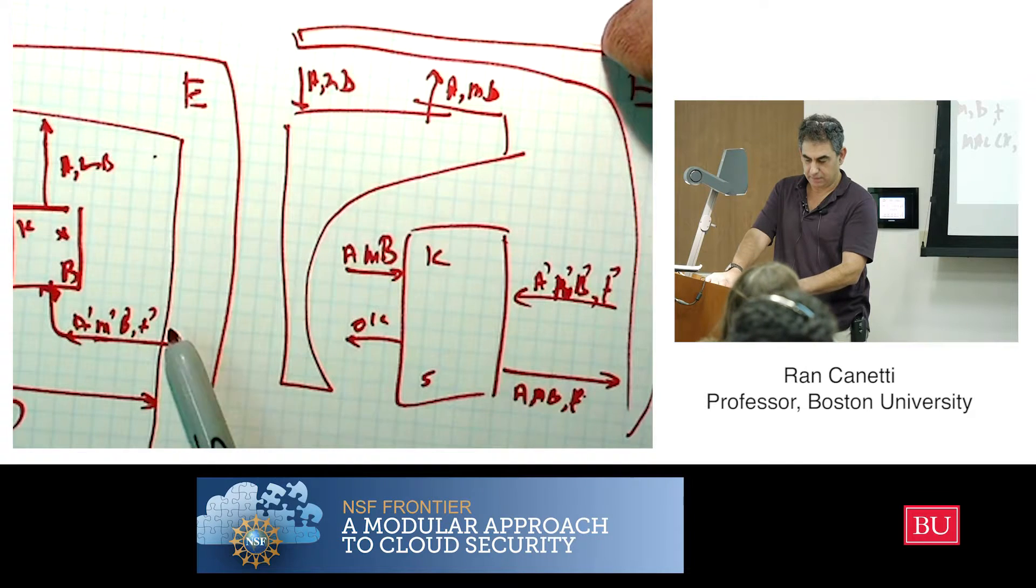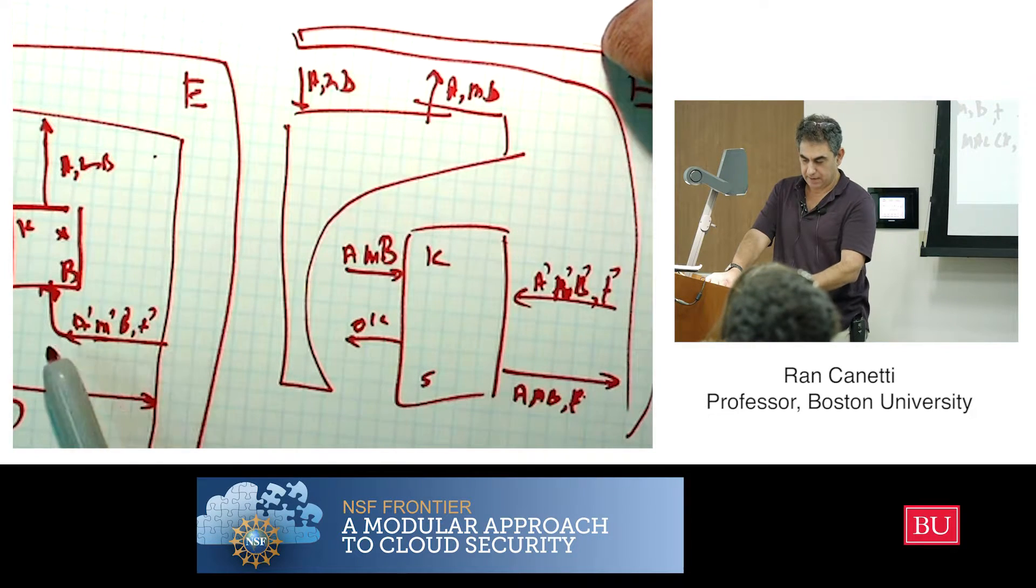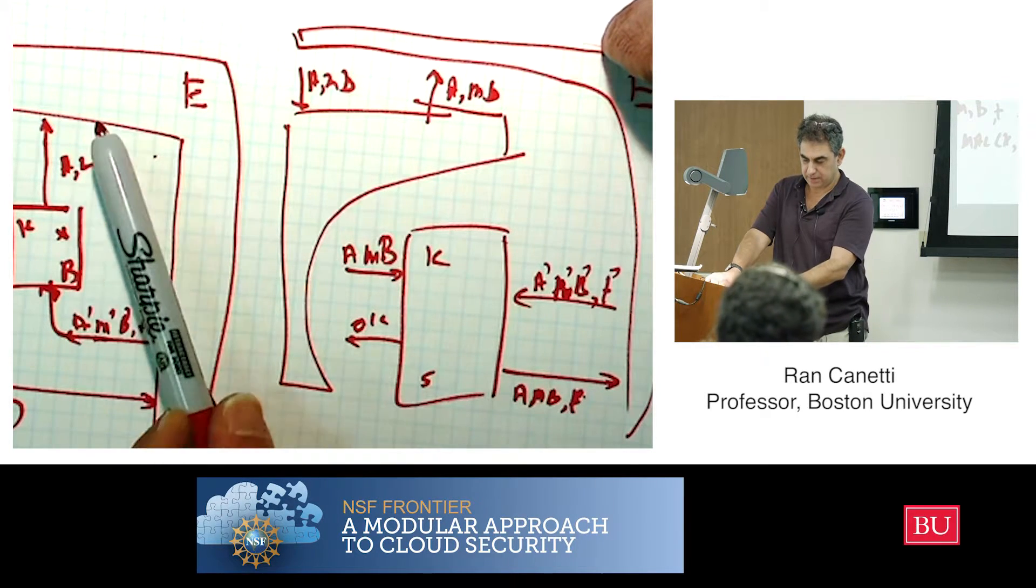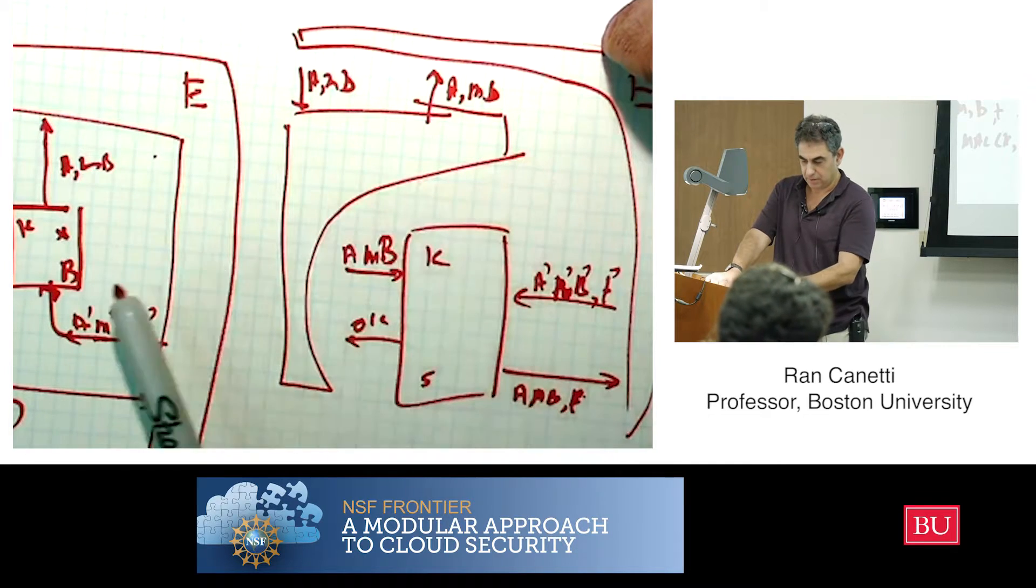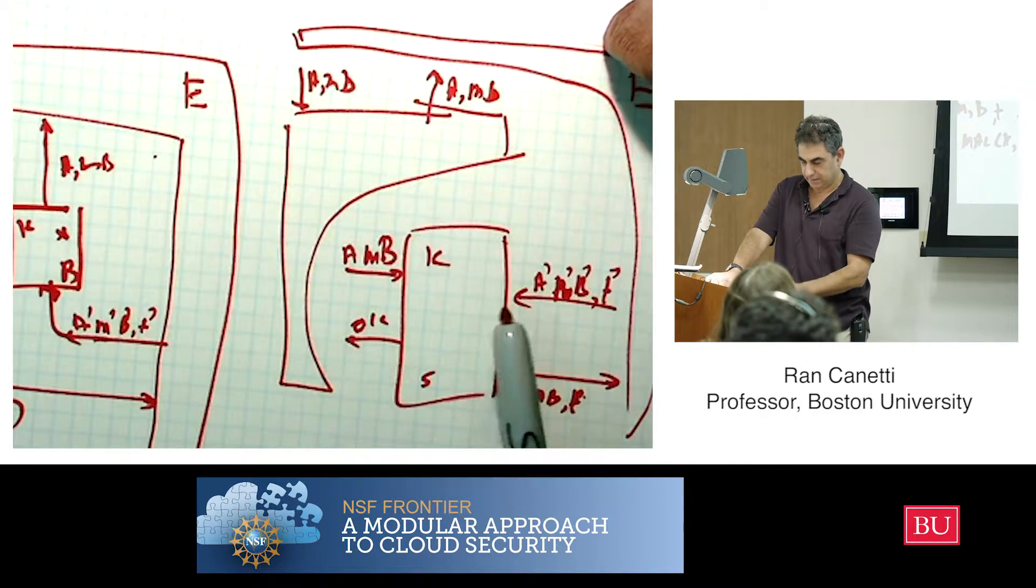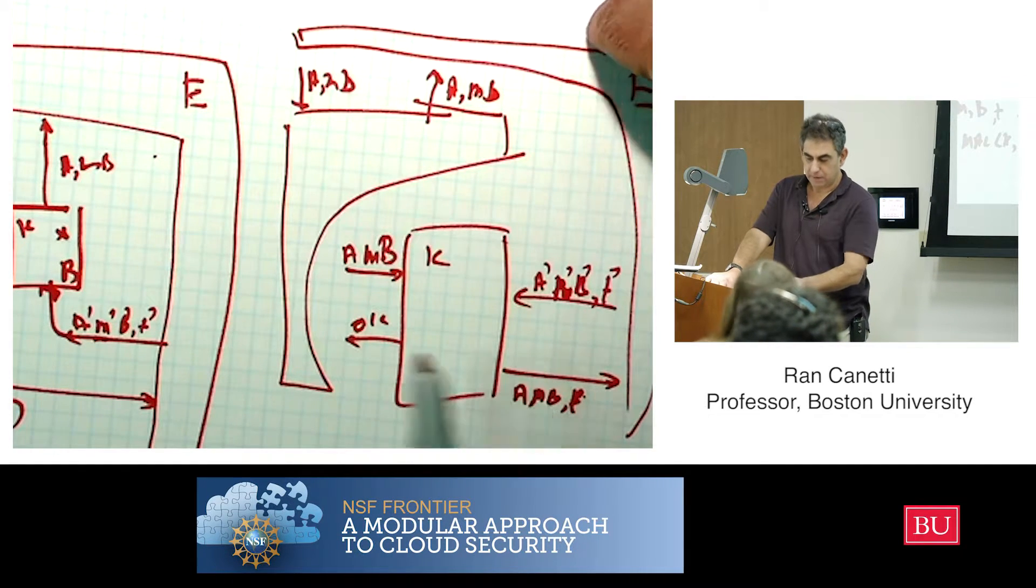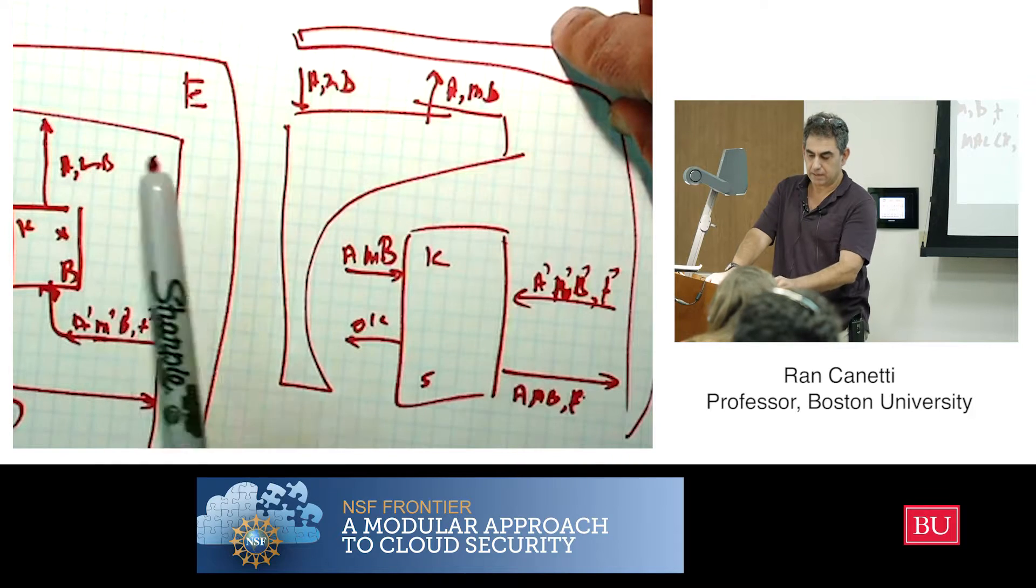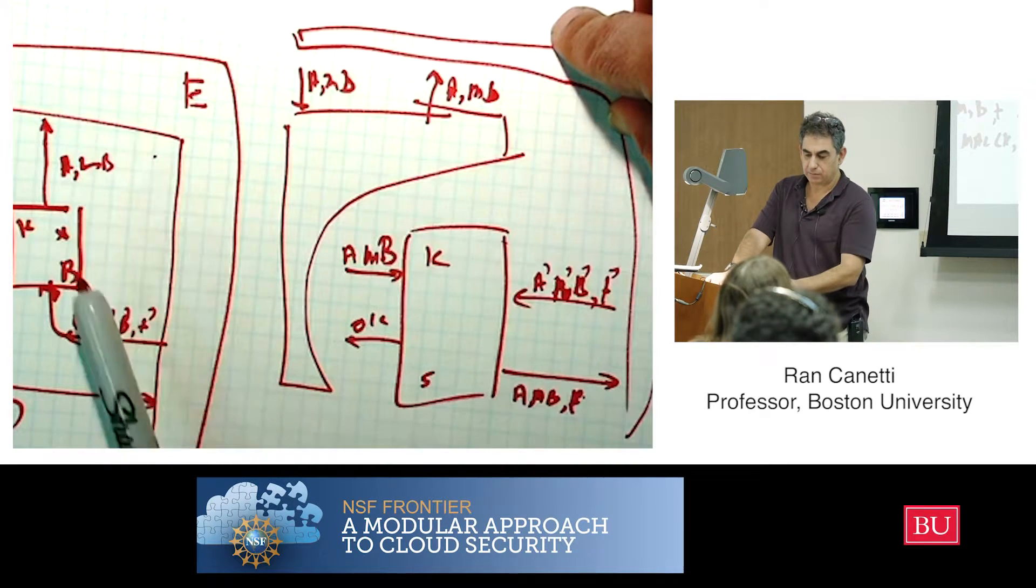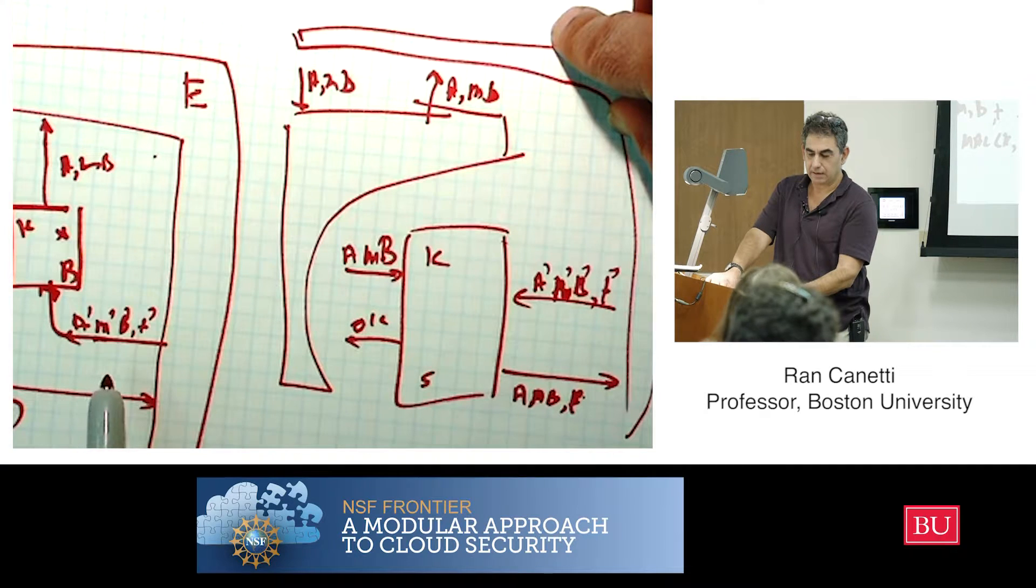And then it gives some other thing, some potentially forged message, a different message with a forged tag, and then it checks to see whether it gets an output. It doesn't get an output on the receiving end. In the real model, it knows that it will get an output on the receiving end if and only if it managed to forge the MAC.